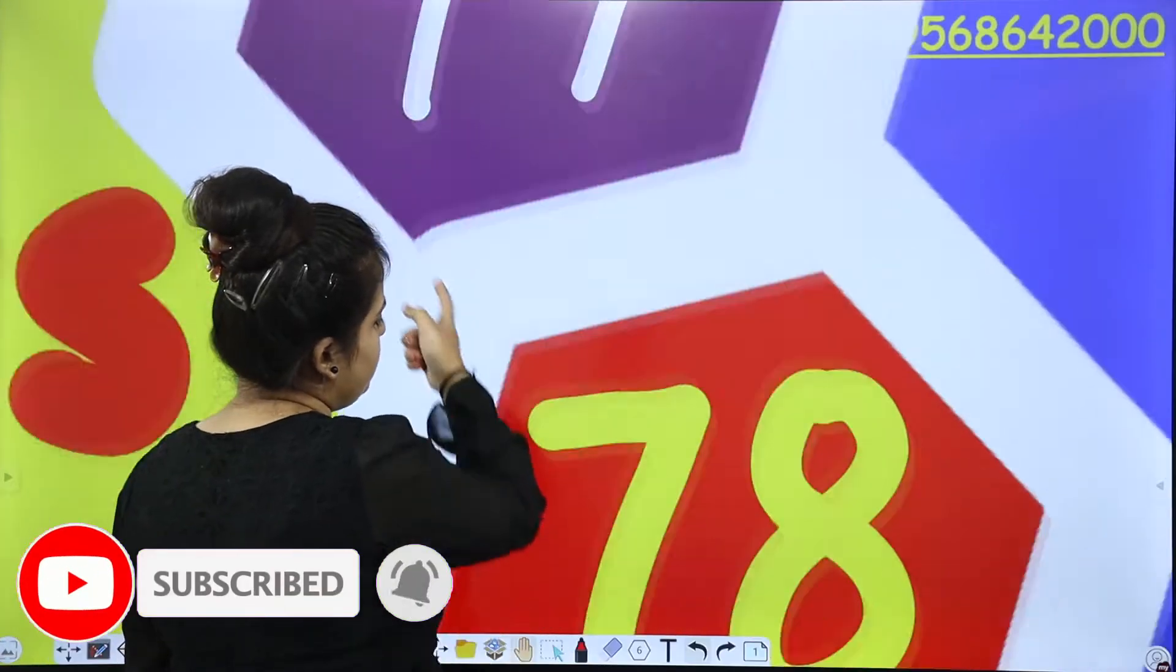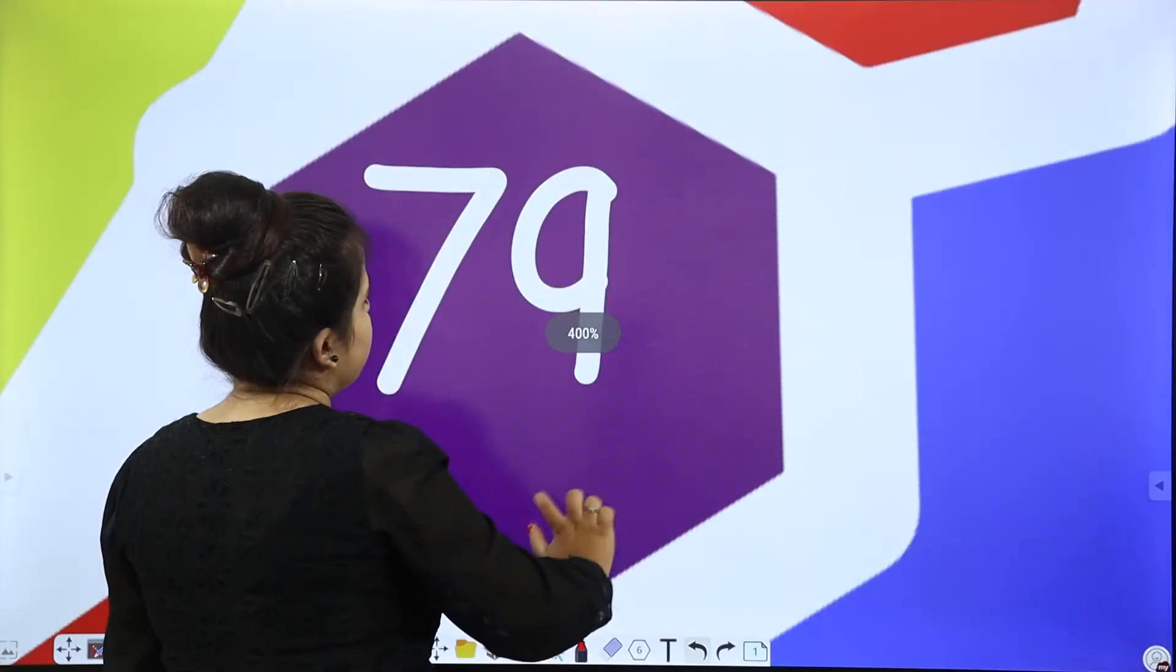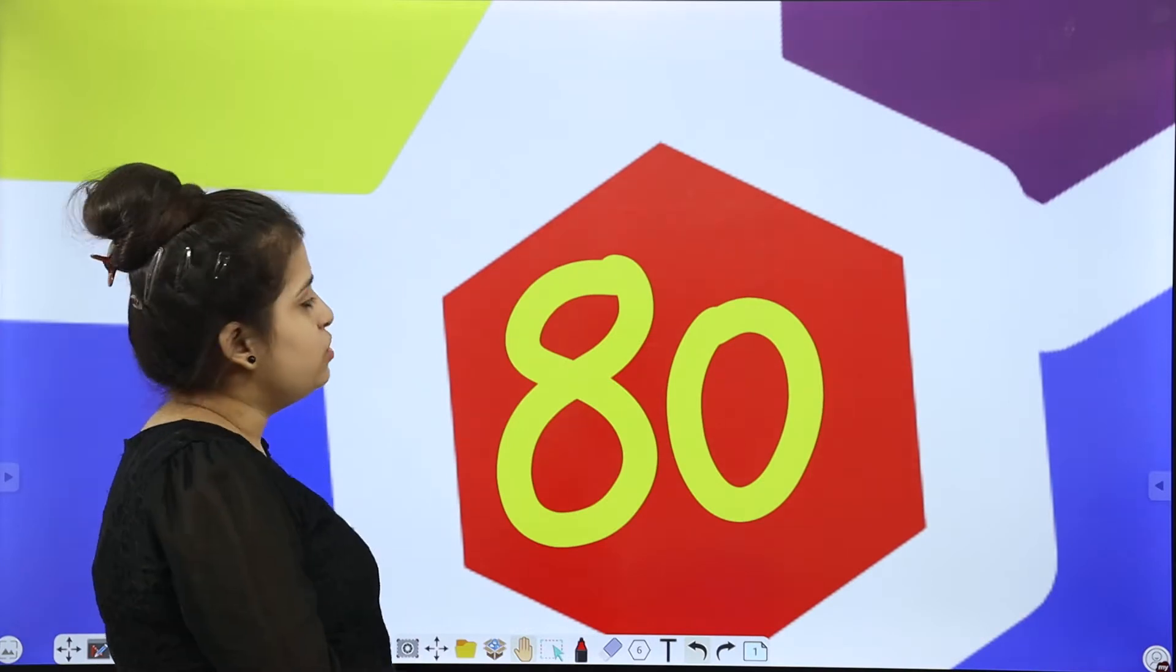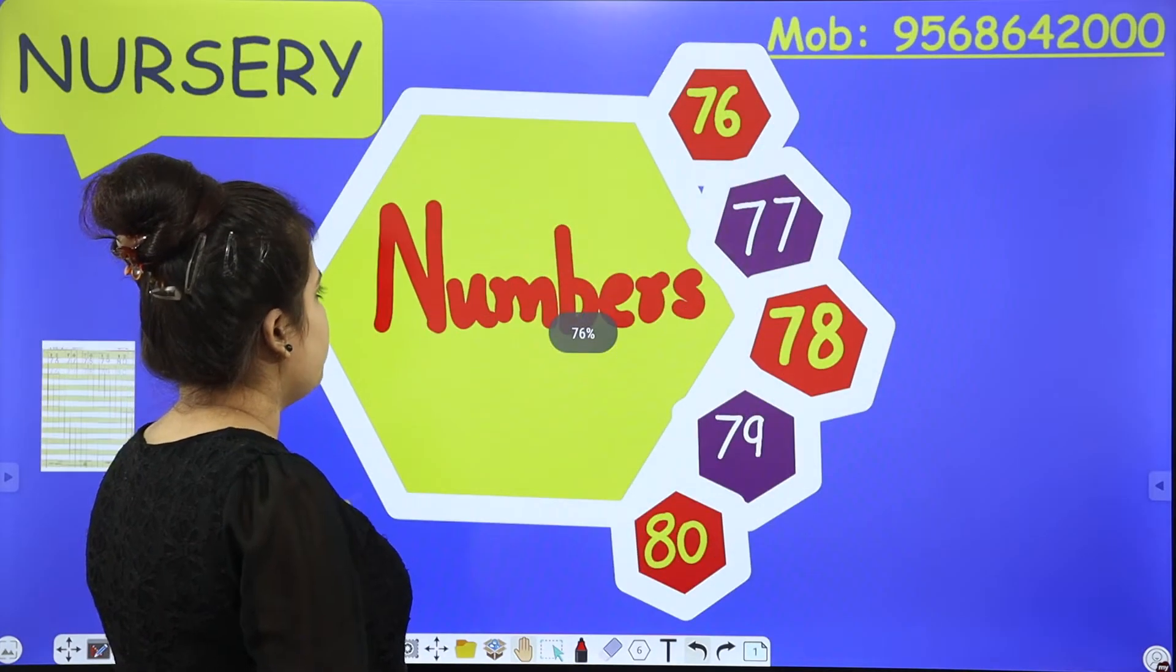77, 78, 79, 79 and 80, 80. So these are the 5 numbers which we are going to do today. So let's start with the formations.